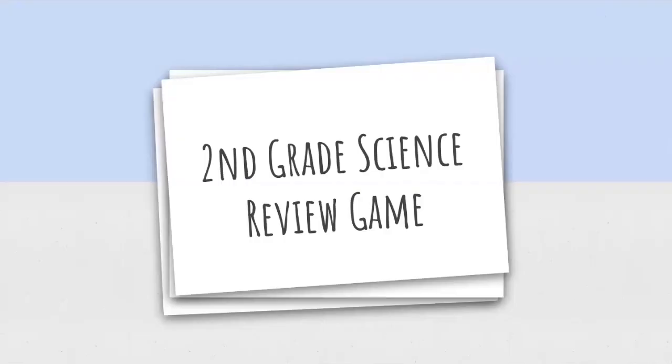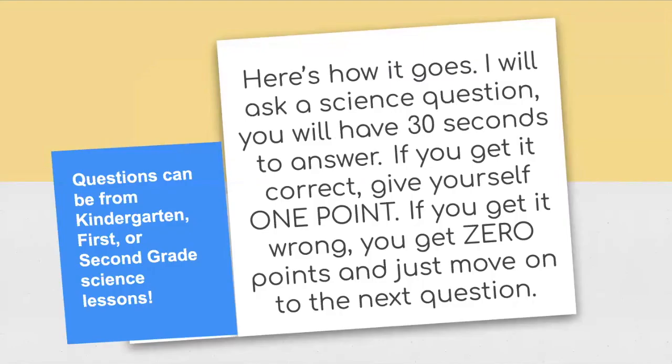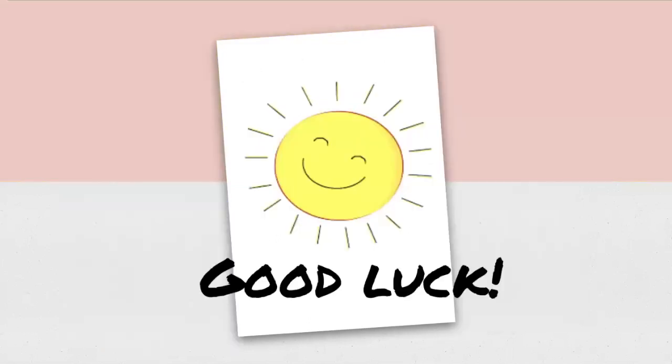The name of the game is second grade science review game. You guys ready? Here's how it goes. I will ask a science question. You will have 30 seconds to answer. If you get it correct, give yourself one point. If you get it wrong, you get zero points and just move on to the next question. Questions can be from kindergarten, first or second grade science lessons. So here we go. First question. Good luck.